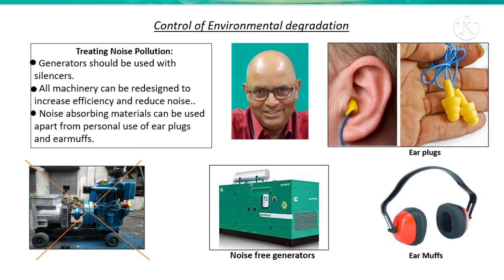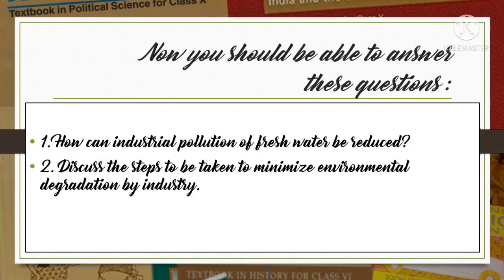With this, the topic of the day is finished. Time for probable questions: One - How can industrial pollution of fresh water be reduced? Two - Discuss the steps to be taken to minimize environmental degradation by industry. Read the textbook and prepare answers to these questions. In the next class we will read about how industry shows the way. Till then, keep reading and have a nice time. Thank you.